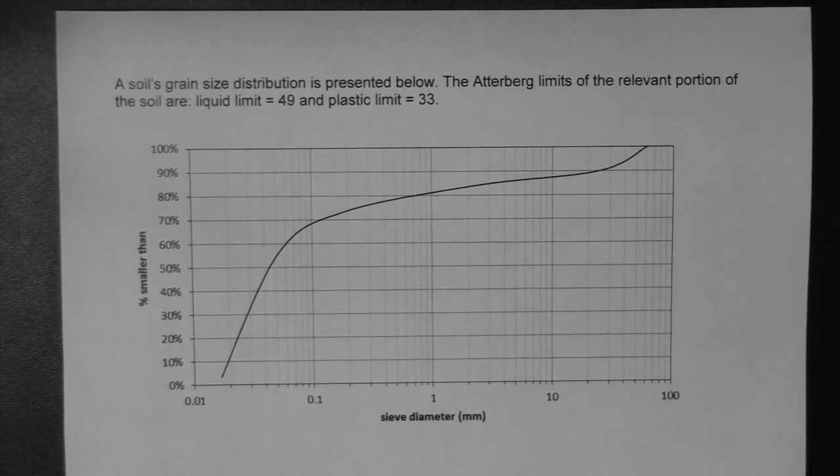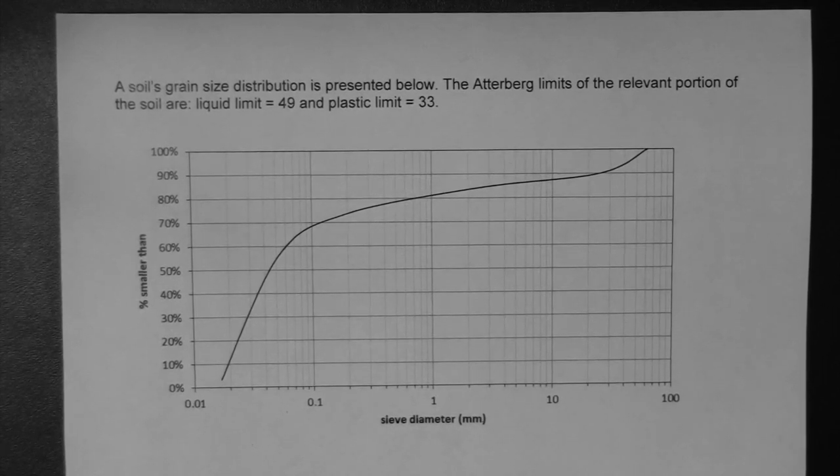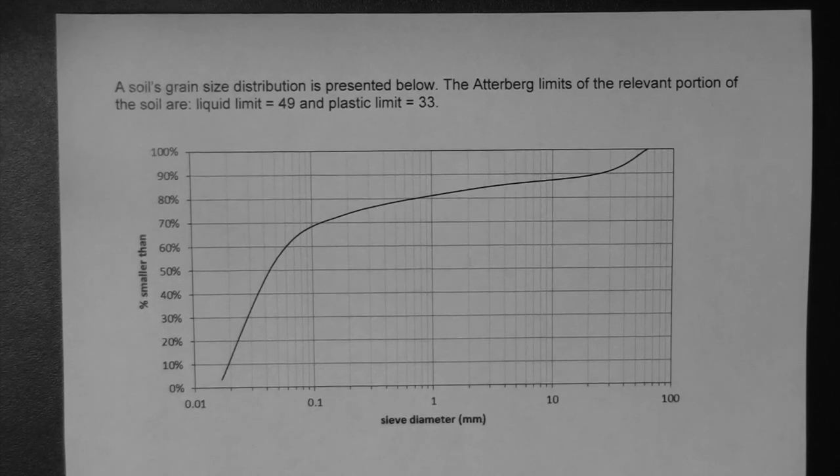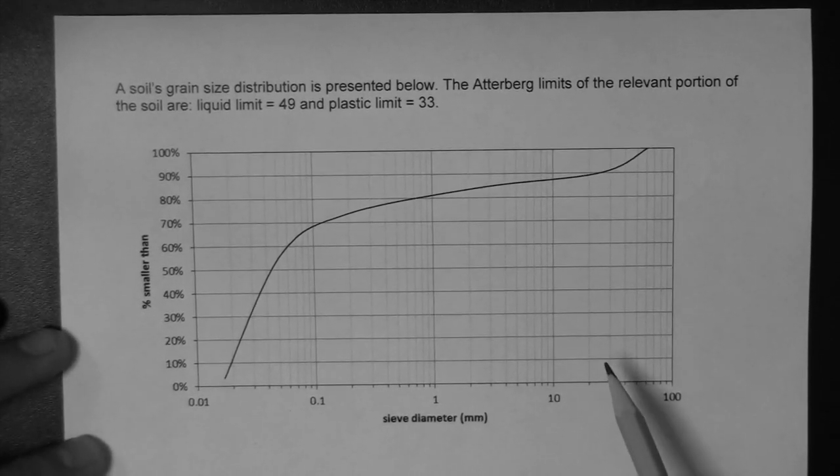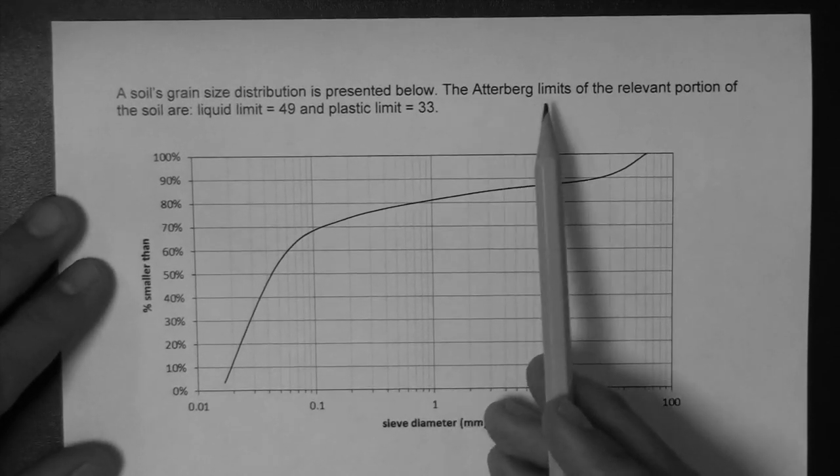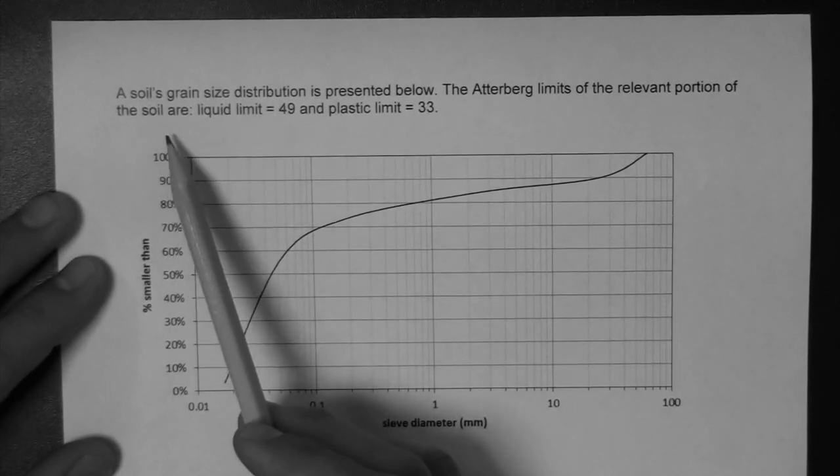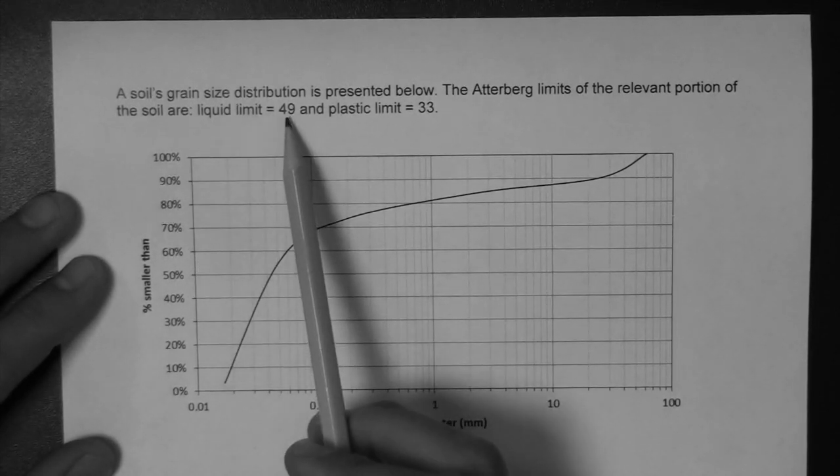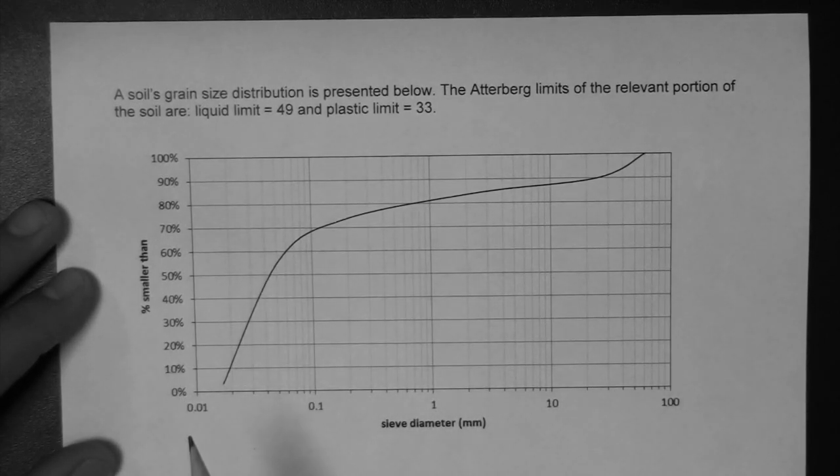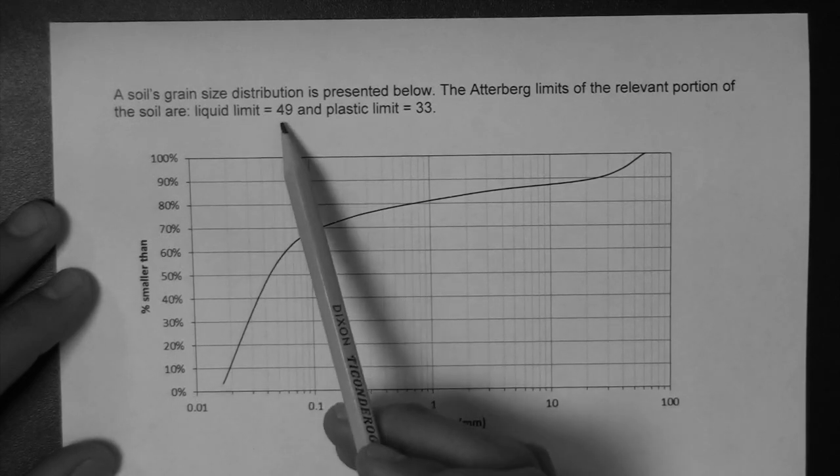Okay, let's do an example of a classification of a soil using the Unified Soil Classification System, the USCS. We're given a grain size distribution of the soil, and we're also given here that the Atterberg limits of the relevant portion, that is the finer portion of course, are 49, that's the liquid limit, and 33, that's the plastic limit. Remember that these two are water contents expressed in percent.